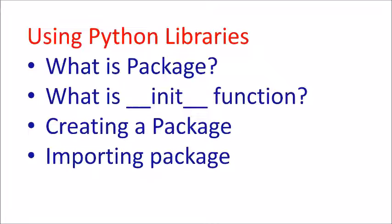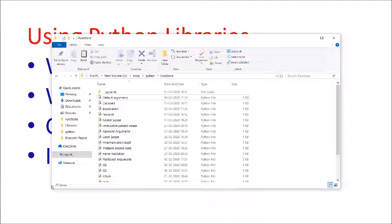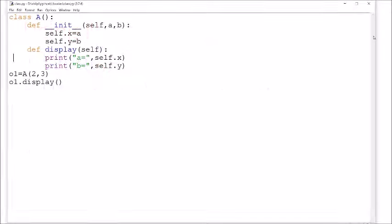We can access these functions and variables or instances using an object. An object is a variable of type class — just like x = 4 makes x a variable of type integer, an object is a variable of type class. I have written a small program to explain it. Here, 'class' is a keyword and 'A' is the user-defined name of the class.